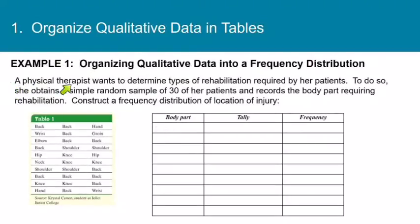Here's an example. A physical therapist wants to determine types of rehabilitation required by her patients. To do so, she obtains a simple random sample of 30 of her patients and records the body part requiring rehabilitation. Construct a frequency distribution of location of injury. So here we have just a table of raw data, and what we're going to do is list each body part, and then we will tally up how many times each one occurs in the list, and then we'll get a frequency.